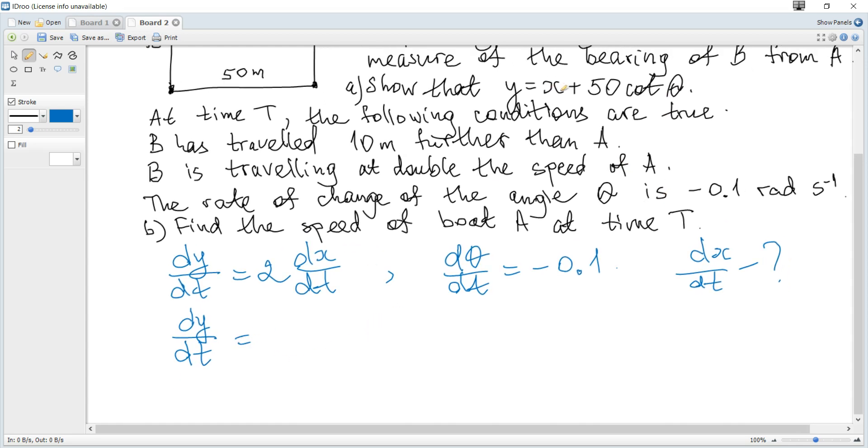So it becomes a derivative of x with respect to t. It's dx over dt plus 50. Derivative of a cotangent formula is given in the data booklet. It's negative cosecant squared theta. And since theta is a function of time we should apply the chain rule. And we should multiply by d theta dt according to the chain rule.